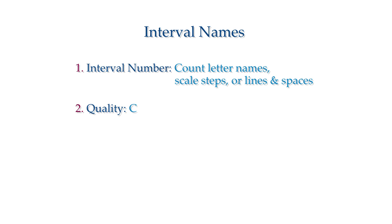One way to think of labeling intervals is to consider two different factors. First, how many letter names or lines and spaces apart are the pitches? Once you know the interval number, you can count the number of half-steps to determine the quality.